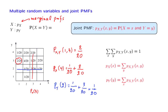We are now able to answer the question that originally motivated us. To find the probability that the two random variables take equal values, we look at all outcomes where X and Y indeed take the same numerical value. We see that it is this event in the diagram, and the probability of that event is 2 over 20. In general, once we have the joint PMF of two random variables, we can answer any questions regarding probabilities of events involving these two random variables.